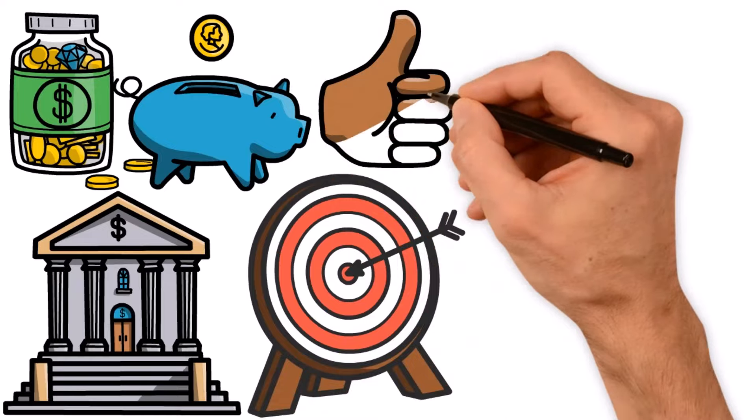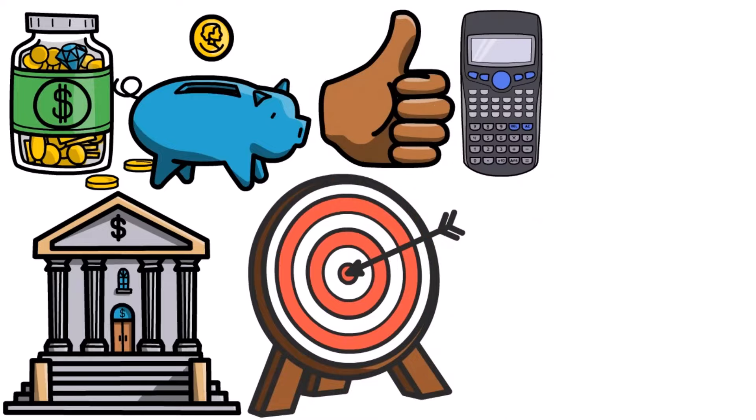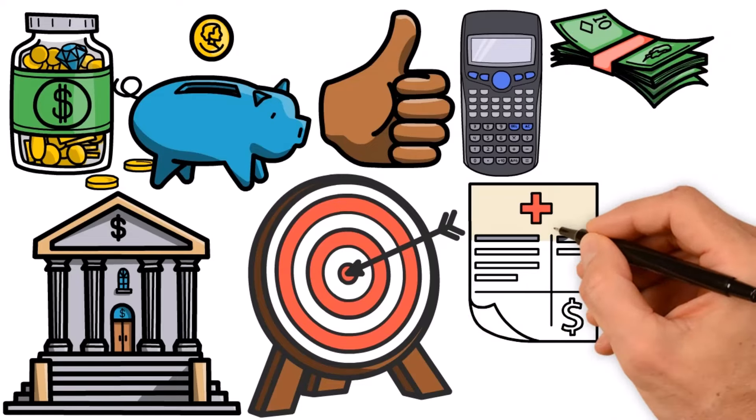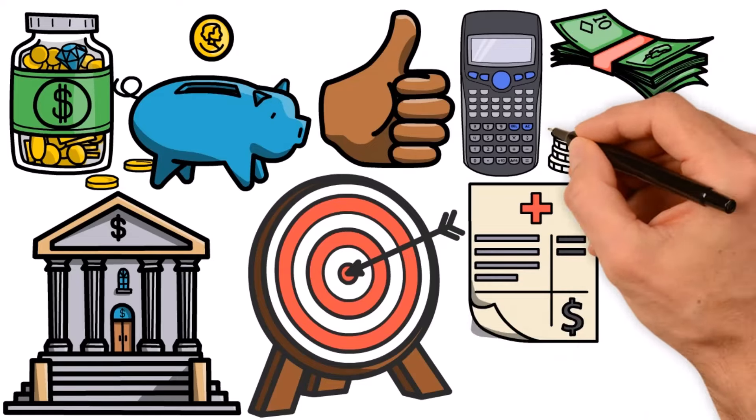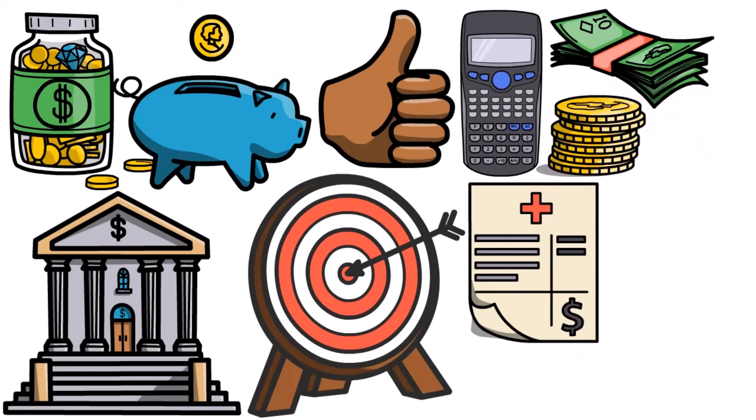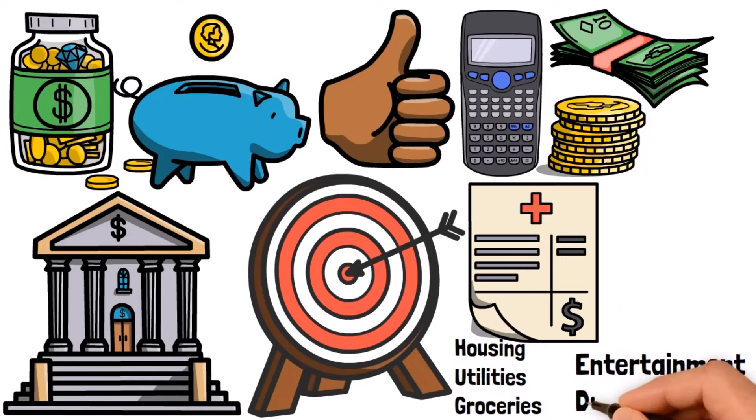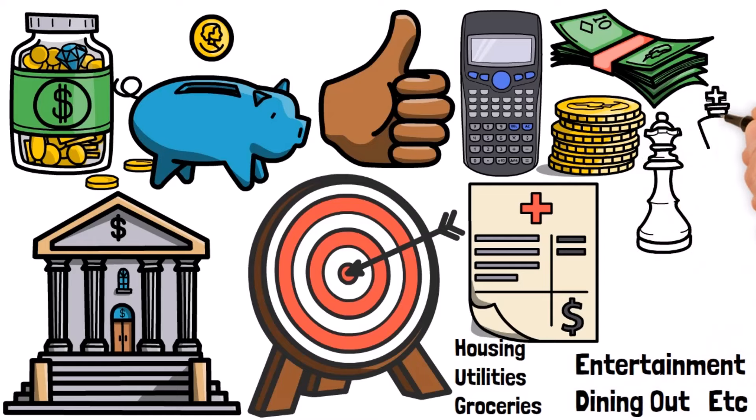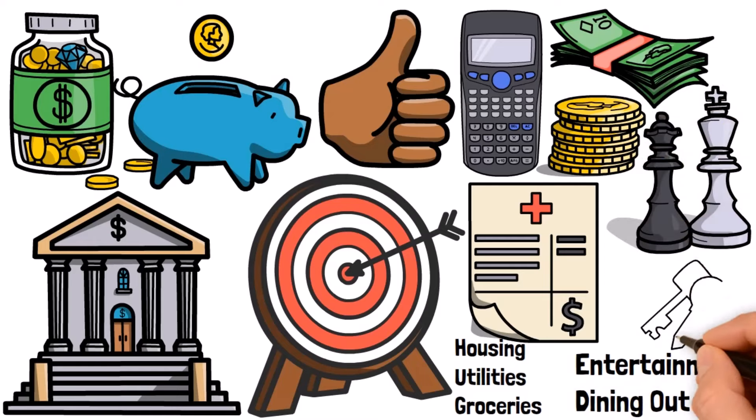Then you must create a budget and stick to it. A budget is a powerful tool that enables you to allocate your money wisely. Start by tracking your income and expenses meticulously. Categorize your expenses into essentials—housing, utilities, and groceries—and discretionary spending—entertainment, dining out, etc. Then set limits for each category and ensure you stay within those limits. Remember, consistency is key.